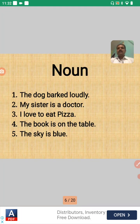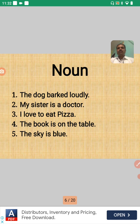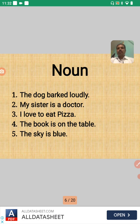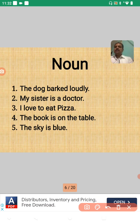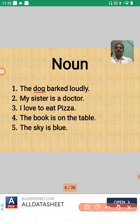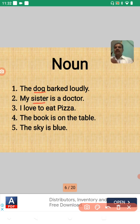Here are some examples. We have to find out the noun. Number one: 'The dog barked loudly.' Here, 'dog' is the noun. Number two: 'My sister is a doctor.' Here both 'sister' and 'doctor' are nouns — sister has to take now nahe, and doctor has to take — both are nouns.